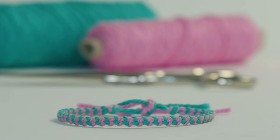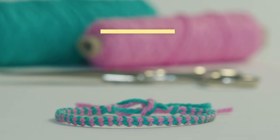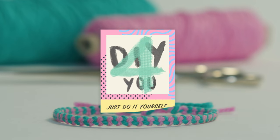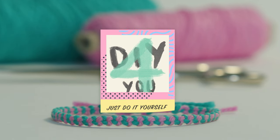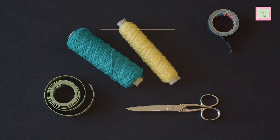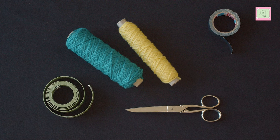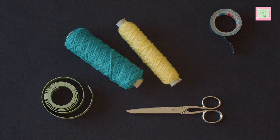In this video I'll show you how to tie a simple bracelet from two threads. For this you need a tape measure, scissors, a sticky tape and cotton yarn in two different colors.